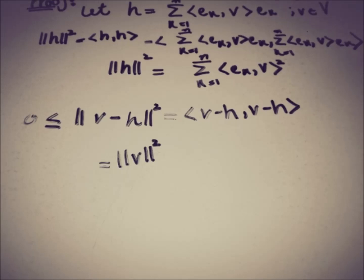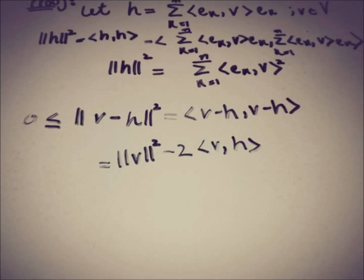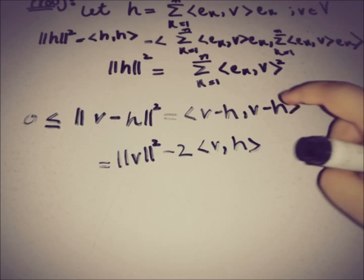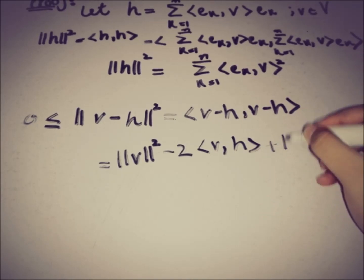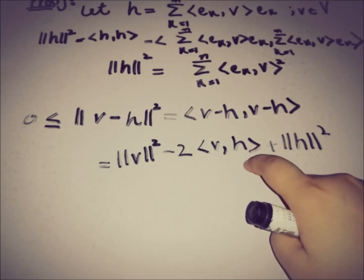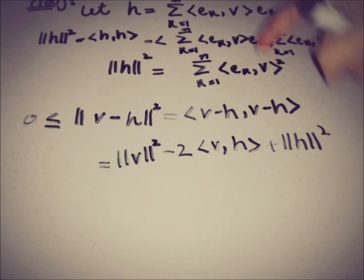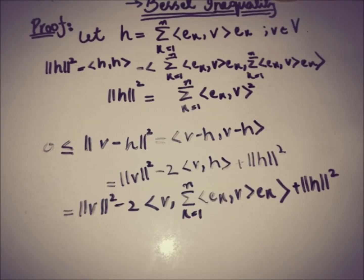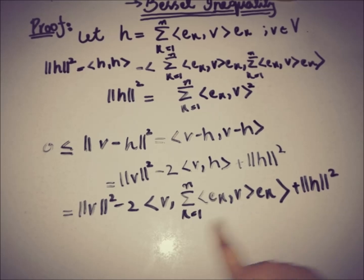Expanding fully: ||v||² minus 2 times ⟨v, h⟩ plus ||h||², with the last term having a positive sign. To manipulate this we substitute the value of h into this inner product, using the expression for h from above. This expression is then further simplified.